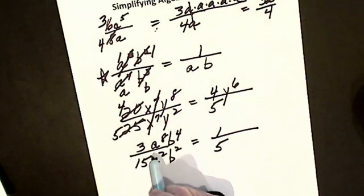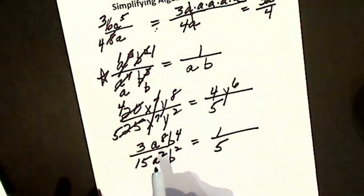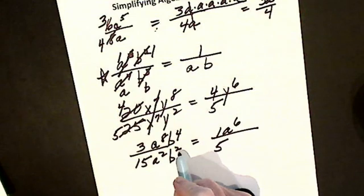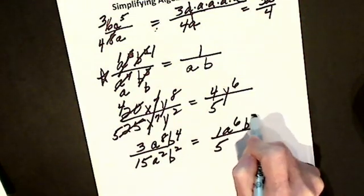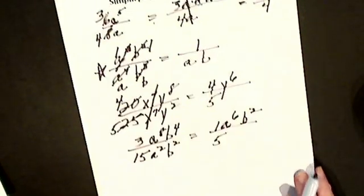Subtract exponents. Again, remember I don't divide them, I subtract them. I get a to the 6th in the numerator. I subtract exponents, I'm going to get b squared. This time, it's in the numerator.